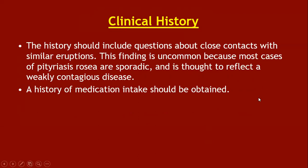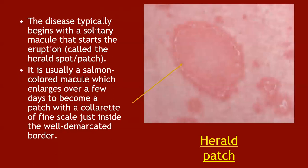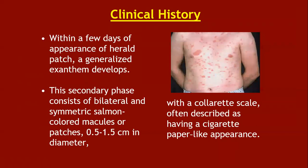The rash of pityriasis rosea typically begins with a solitary macule called the herald patch — usually a salmon-colored macule that enlarges over a few days to become a patch with collarette of fine scales just inside a well-demarcated border. The collarette means the erythema is advancing while the scaling falls behind that advancing edge. Within a few days of the herald patch appearing, a generalized exanthem develops. The secondary phase consists of bilateral and symmetrical salmon-colored macules or patches 0.5 to 1.5 cm in diameter with a collarette of scale, described as a cigarette paper-like appearance.